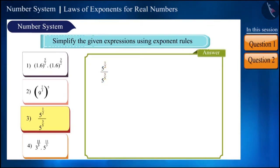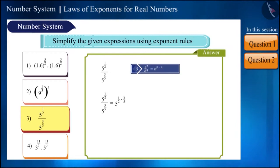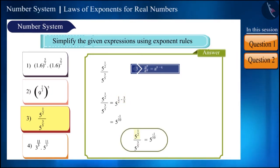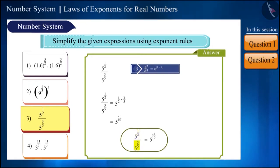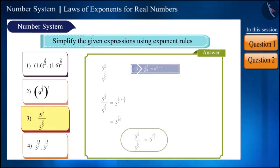In this one, the bases are the same and the exponents are different, so we simplify using the division rule of exponents. We write 5 raised to the power 1/2 minus 3/5. Subtracting 3/5 from 1/2 gives minus 1/10, so 5^(1/2) divided by 5^(3/5) equals 5 raised to the power minus 1/10.